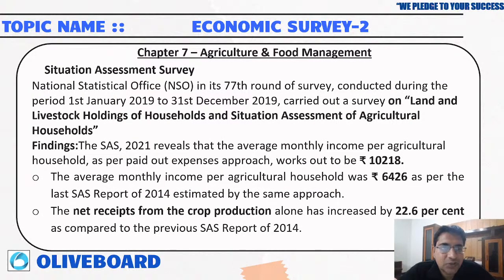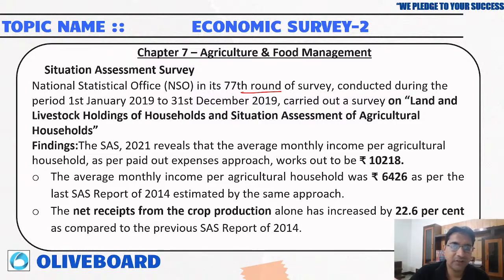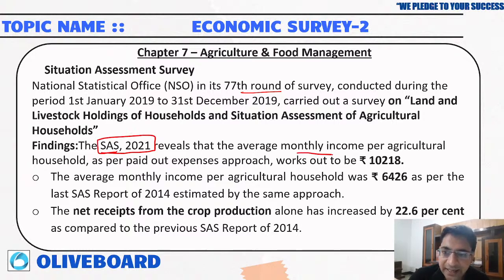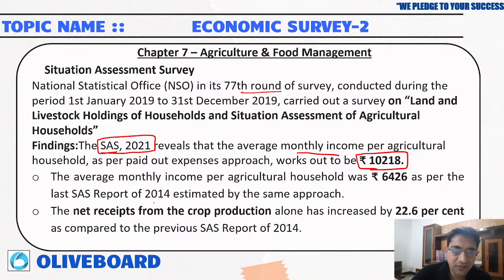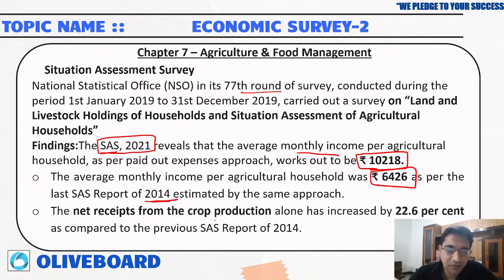The NSSO's 77th report — Situation Assessment Survey, conducted from 1st January to 31st December 2019 — reveals that the average monthly income per agricultural household is rupees 10,218. In 2014, it was rupees 6,426 per month. Net receipts from crop production alone increased by 22.6 percent.